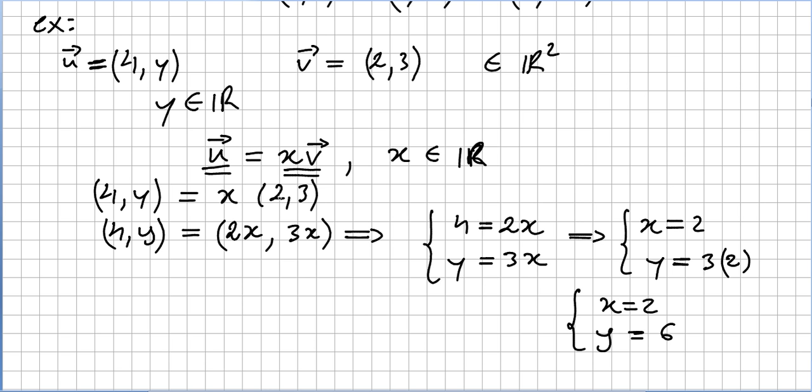Well, I shouldn't say linear combination. I should say we can find vector u multiplying v by a given scalar, because linear combination is for two vectors.